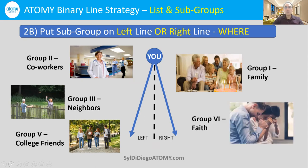And faith community, you could put them on the right line. Now, depending on your specific situation, there may be some variations. For example, if you have a huge family with hundreds of cousins, then maybe you'll put your faith group on the left side because your right group family line would be so long with many people. On the other hand, if you have just a handful of siblings and not many cousins, then you would definitely put your faith group there. If you don't have a faith group and very little family, then maybe you'd put your neighbors there, especially if they know your family.